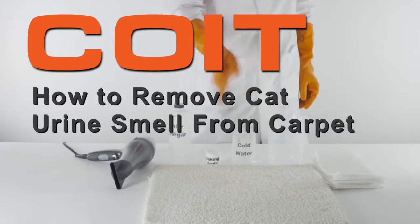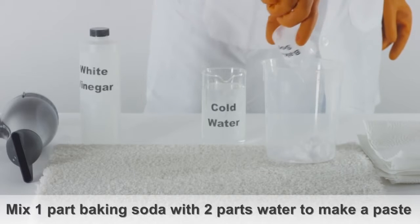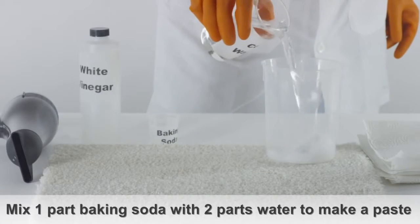How to remove cat urine smell from carpet. Using one part baking soda and two parts water, combine the two ingredients into a small bowl to make a paste.